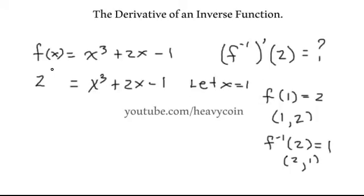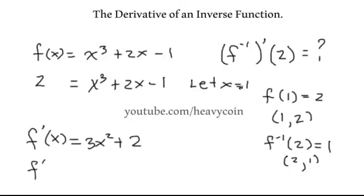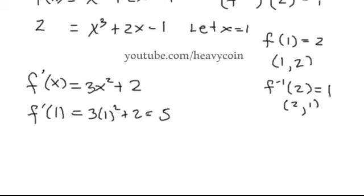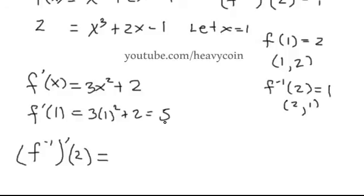Now we take the derivative of F of X, which is 3x squared plus 2. We plug in 1 — the value we were looking for. 3 times 1 squared is 3, plus 2 gives us 5. So the derivative evaluated at 1 is equal to 5. Therefore, the derivative of F inverse at 2 is the reciprocal of 5, which is 1 over 5.